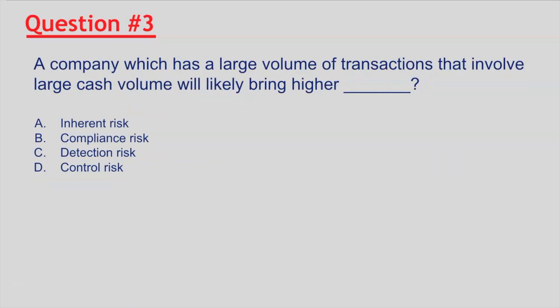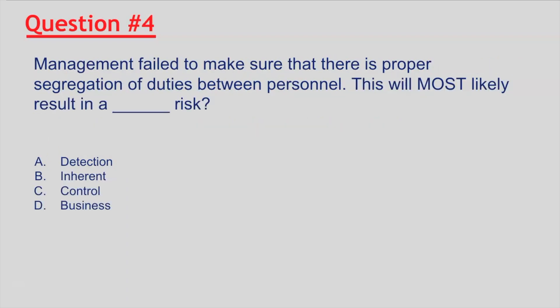Question number three: a company which has a large volume of transactions involving large cash volume will likely bring higher what? If you selected A, inherent risk, you are correct. This is because the risk of large cash volume exists before controls are implemented.